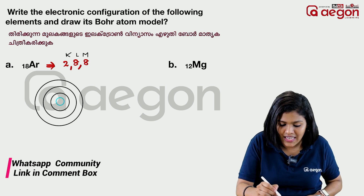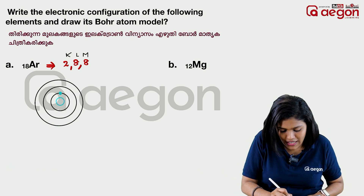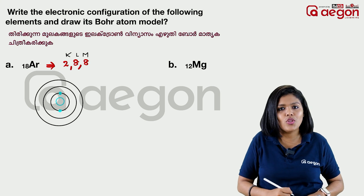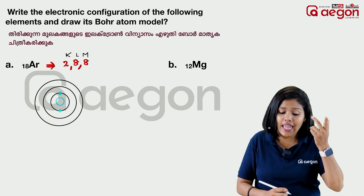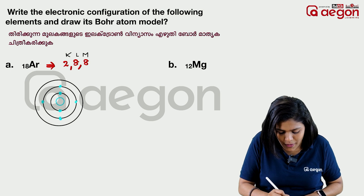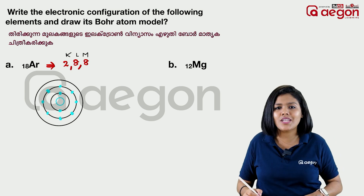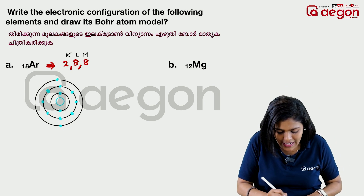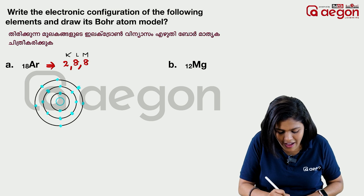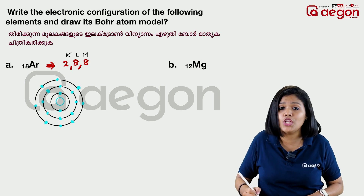In the K shell there are 2 electrons. In the L shell there are 8 electrons — counting 1, 2, 3, 4, 5, 6, 7, 8 electrons. In the M shell there are 7 electrons — 1, 2, 3, 4, 5, 6, 7 electrons.